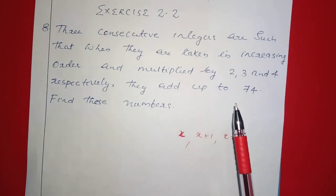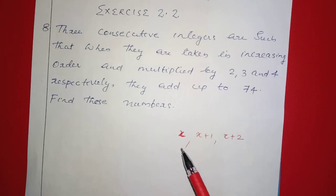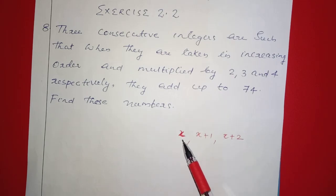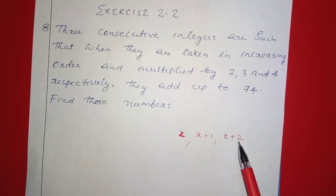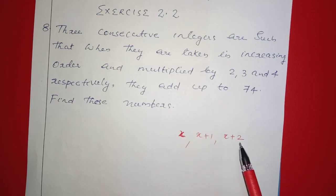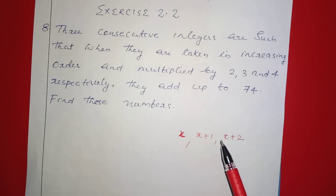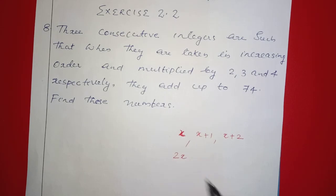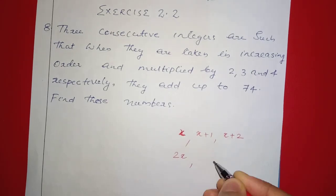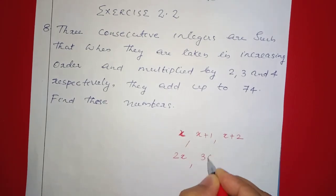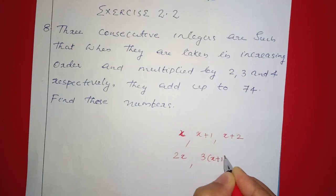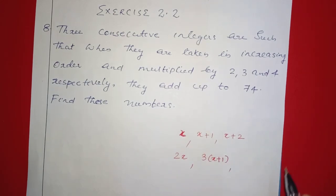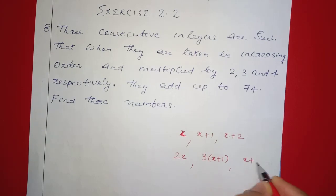When they are taken in increasing order, we have three numbers: x, x plus 1, x plus 2. Multiplied by 2, 3, and 4 respectively. That is, the first number x is multiplied by 2, the next number x plus 1 is multiplied by 3, and the next number x plus 2 is multiplied by 4.